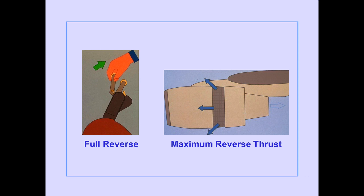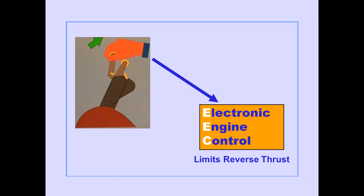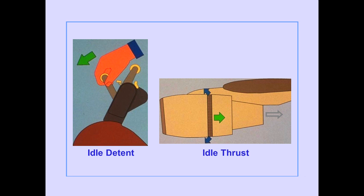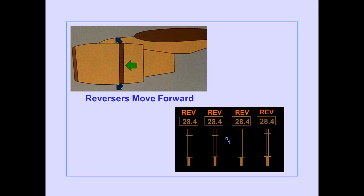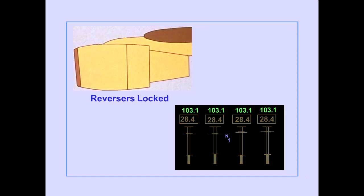Moving the reverse thrust levers to the full reverse position applies maximum reverse thrust. The EEC automatically limits maximum reverse thrust using N1 RPM. Moving the reverse thrust levers to the idle detent reduces thrust to idle when reverse thrust is no longer required. Moving the reverse thrust levers to the down position commands the reversers to move forward to the stowed position. When the reversers move forward, the reverser status enunciators change color to amber. When the reversers are locked in the stowed position, the reverser status enunciators are no longer displayed.